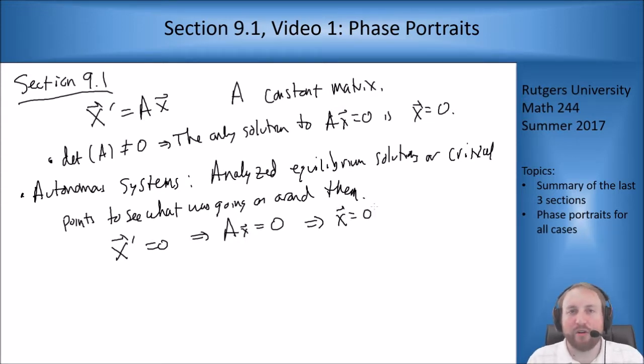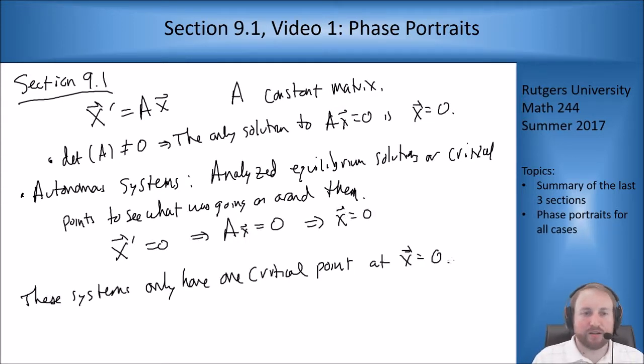We want to see what happens for curves that are near 0 but not at 0. Because if they're at 0, we're just there forever. So if we're nearby, what happens? The way we analyze this is through the eigenvector eigenvalue approach that we did in all of chapter 7.